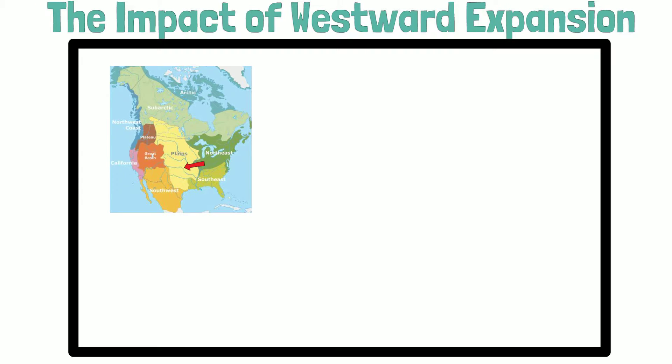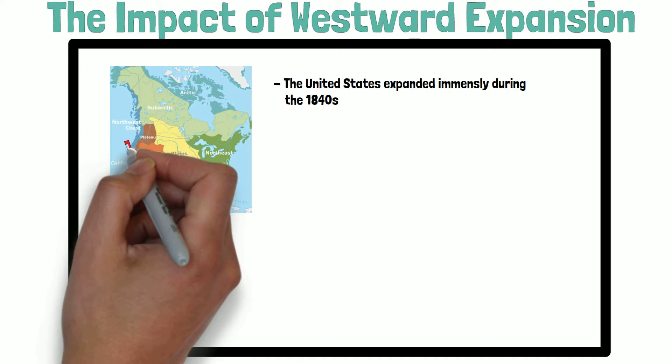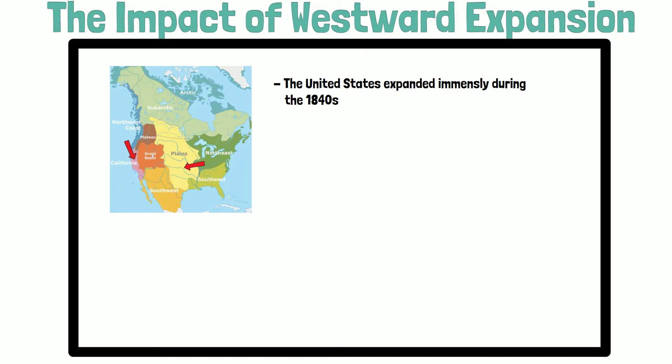Let's talk about the impact of westward expansion on Native Americans. The 1840s was a period that saw the beginning of immense expansion for the United States. Conquests from war with Mexico in 1848 increased dramatically the amount of land under U.S. control, and rumors of gold in the hills of California led to the rush of thousands of prospectors to the west.